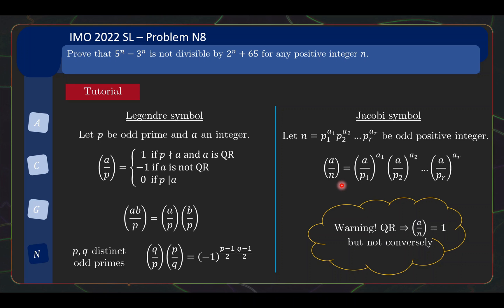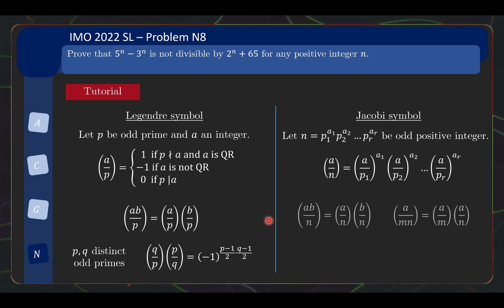The natural question is, does this still encode something about whether a is a quadratic residue or not? It's useful to keep in mind that it only captures the quadratic residue interpretation partly. We still have the result that if a is not divisible by any of the primes and if a is a quadratic residue, then a over n is still 1. But the converse does not hold, so just be very careful about that. But we won't need this fact for this problem. We just need to keep track of the generalization of these two properties.